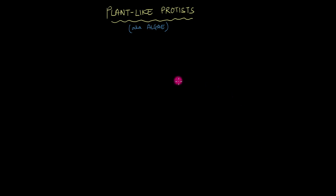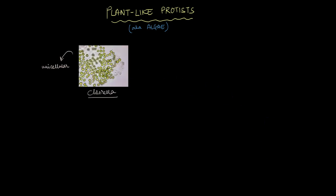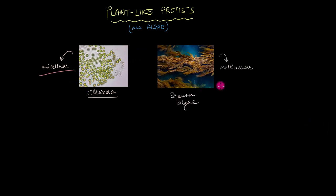Like we talked about before, some algae are unicellular, like chlorella, chlamydomonas, and all the different diatoms, etc. All of these algae are unicellular. And then there are some which are multicellular, like the seaweeds that you can find in the oceans.